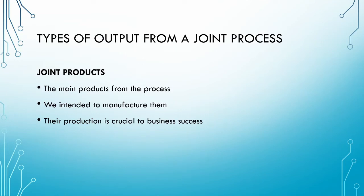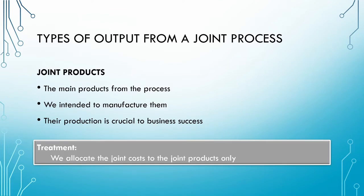Now let us consider what can come out of the joint process. First, we get our joint products. These are the main products which we intended to produce, and their production is crucial to our business being successful. These joint products normally have a significant sales value. Our joint products are the only output to which we allocate our joint costs. We will briefly identify the major techniques to allocate the joint costs to the joint products later in this video.